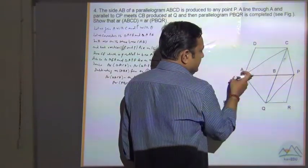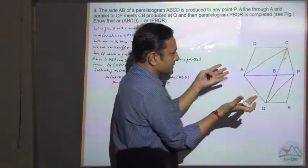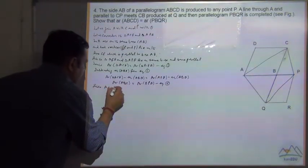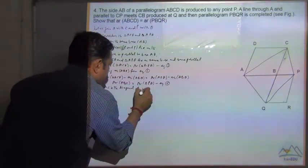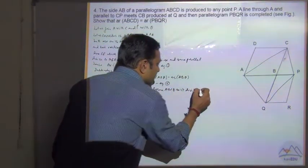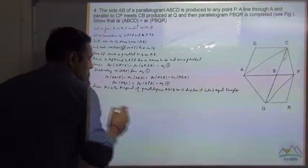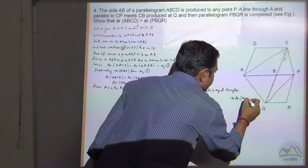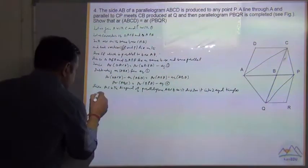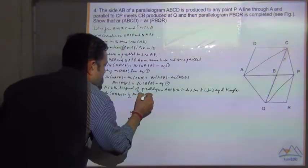Now in parallelogram ABCD, since AC is the diagonal, it divides the parallelogram into two equal triangles ADC and ACB. So since AC is the diagonal of parallelogram ABCD, area of triangle ABC is equal to one-half area of parallelogram ABCD. Call this equation 3.